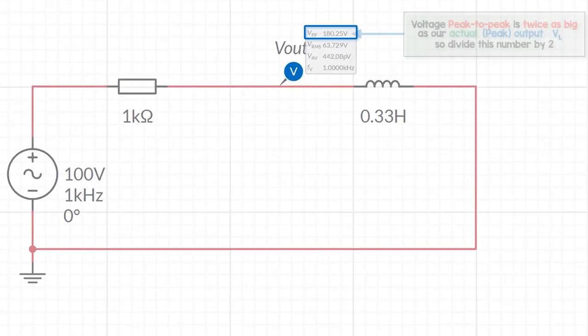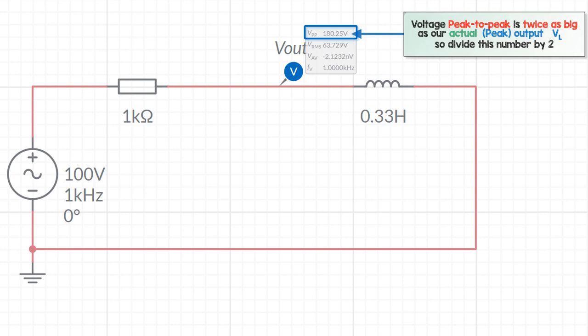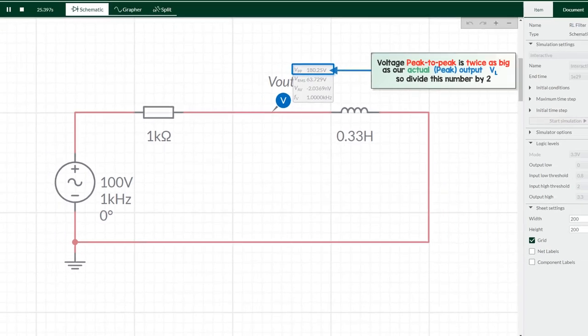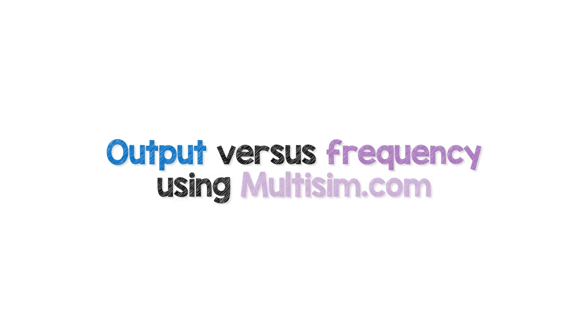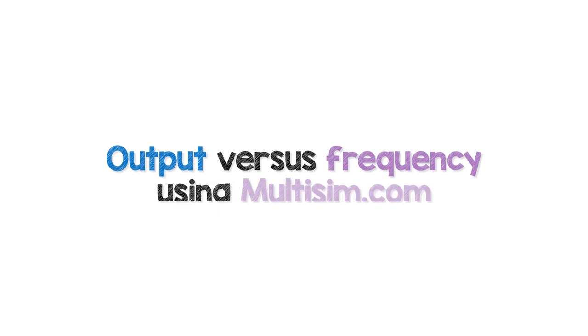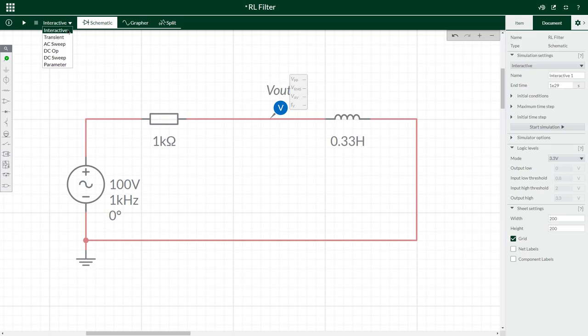And the periodic probes, because they give us peak-to-peak, we need to divide this number 180 by 2 to get the peak value. So this output is actually 90 volts at the moment.